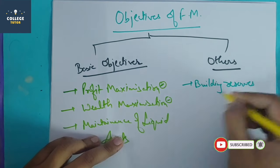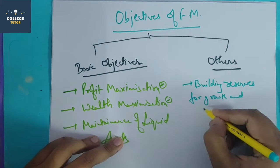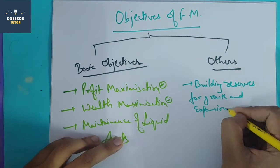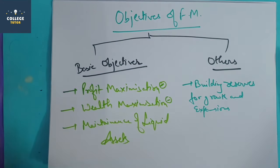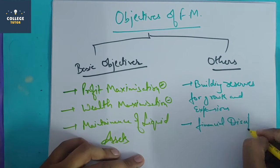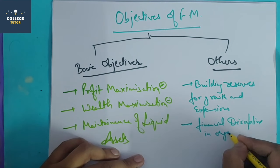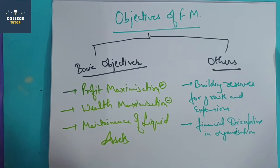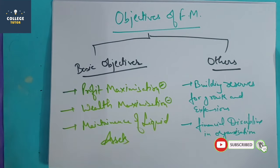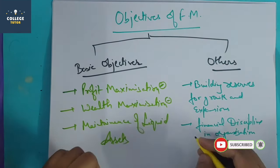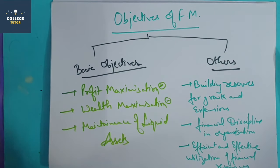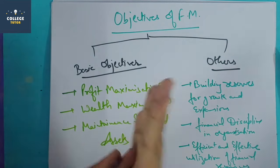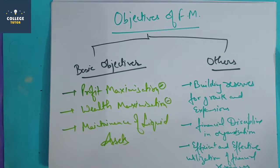The other objectives include: building reserves for growth and expansion — managing the dividend ratio so there is growth, because if we lose shareholders the business cannot grow. Financial discipline in the organization — all departments must maintain financial discipline; no department should overspend or underspend. And effective and efficient utilization of financial resources — using all financial resources effectively and efficiently.